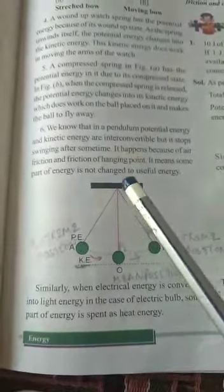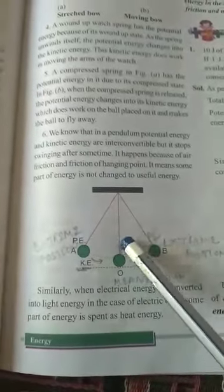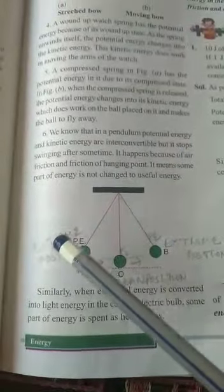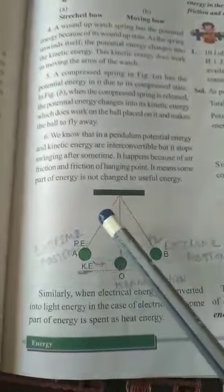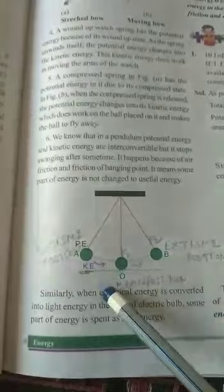But it stops swinging after some time. Why it happens? It happens because of air friction and friction of hanging point. It means some part of energy is not changed into the useful energy.